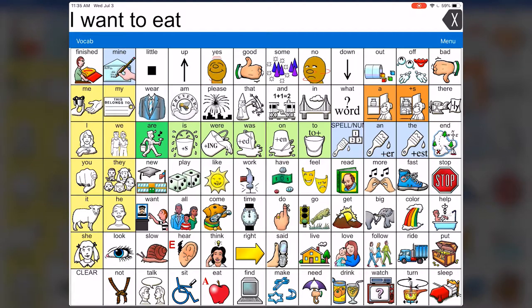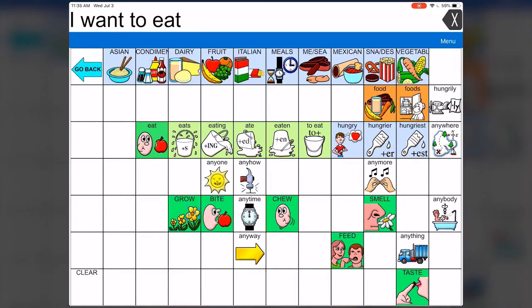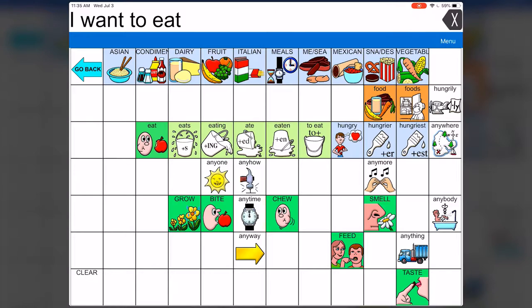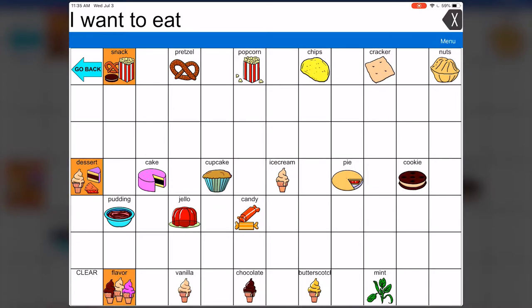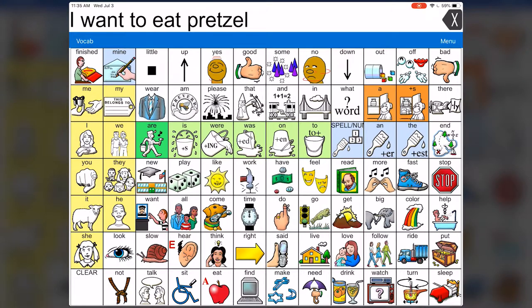To eat. It pops me back out to the home page so I can restart my motor plan to go back in and make the food selection, which is now available to me as categorically organized fringe vocabulary across the top of the page. I'm feeling a little snacky. I want to eat a pretzel. Pretzel. So now my message is generated in the top window and I can click on the message window to speak it. I want to eat pretzel.